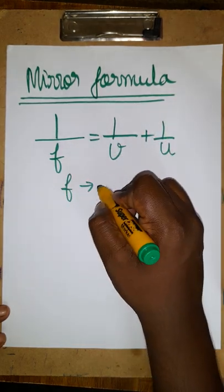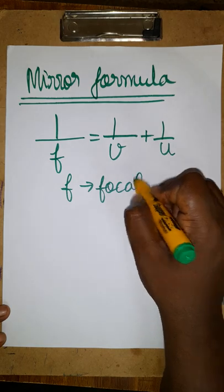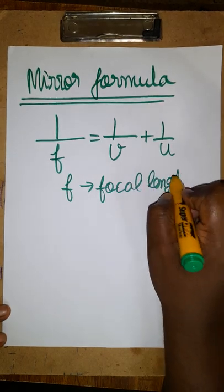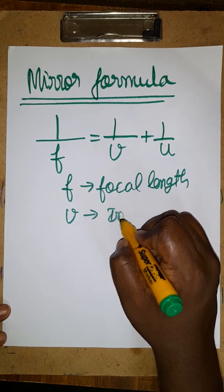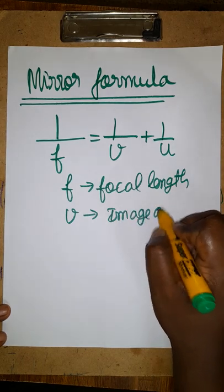What is f now? f is called focal length. What is v now? Image distance from the pole center, image distance.